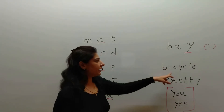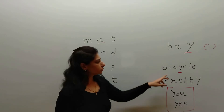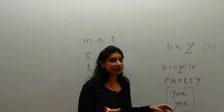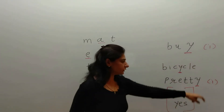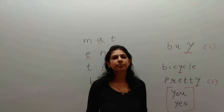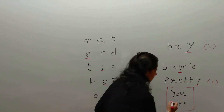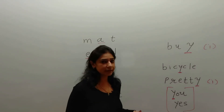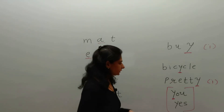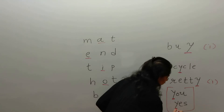In 'bicycle,' Y sounds like A, so it is a vowel. In 'pretty,' Y sounds like I, so it is a vowel. So in these words Y is a vowel, not a consonant. But in 'you,' Y is a consonant because it sounds like 'yuh.' Usually when Y comes at the beginning of a word it sounds like 'yuh' and is called a consonant. In 'yes,' it also sounds like 'yuh,' so we call it a consonant.